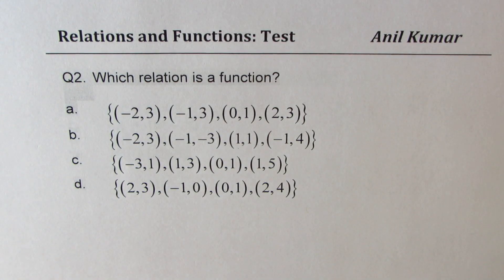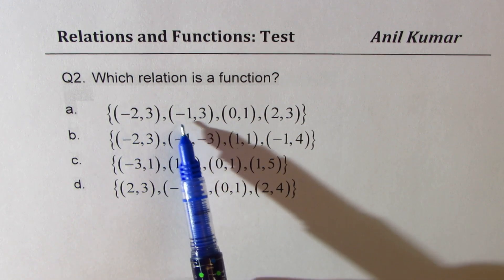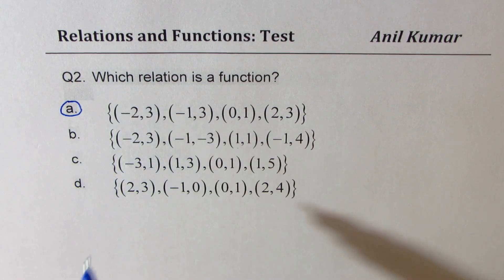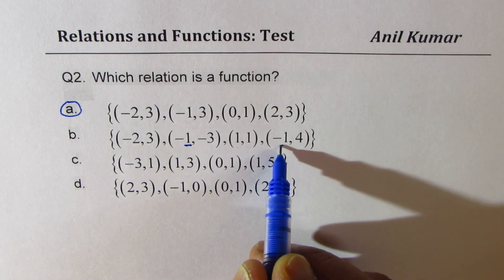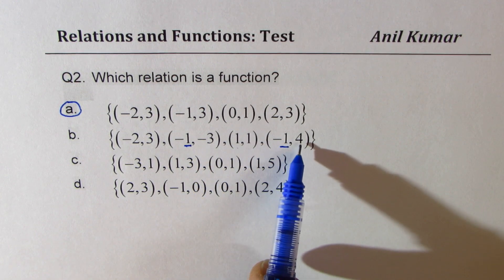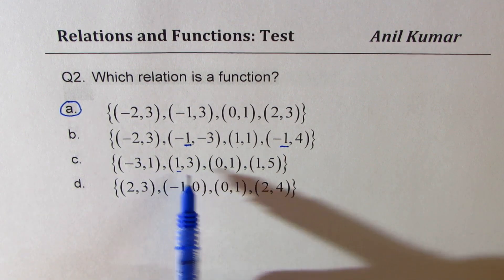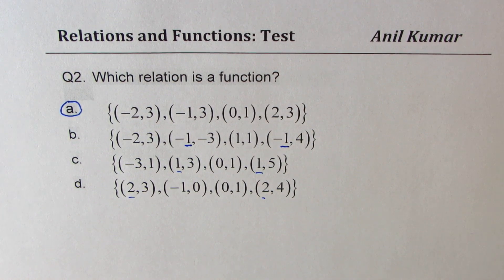Question number two: which relation is a function? You have to check that x-values do not repeat. For option A: -2, -1, 0, 2 — not repeating, so it is a function. For option B: -1 is repeating with two different y-values, so not a function. In C, 1 is repeating, and in D, 2 is repeating. So B, C, D are not functions — only A is a function.